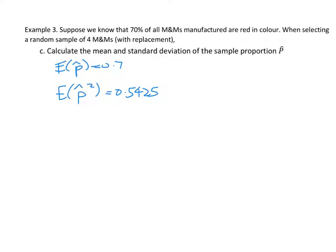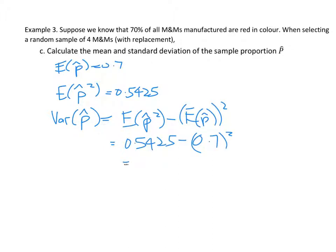So therefore, from before, we have expected value of p hat is 0.7, expected value of p hat squared is 0.5425. So then the variance of p hat is equal to the expected value of p hat squared minus the expected value of p hat all squared, which is 0.5425 minus 0.7 squared. This equals 0.0525, and so the standard deviation is the square root of all of this, which equals 0.229129.